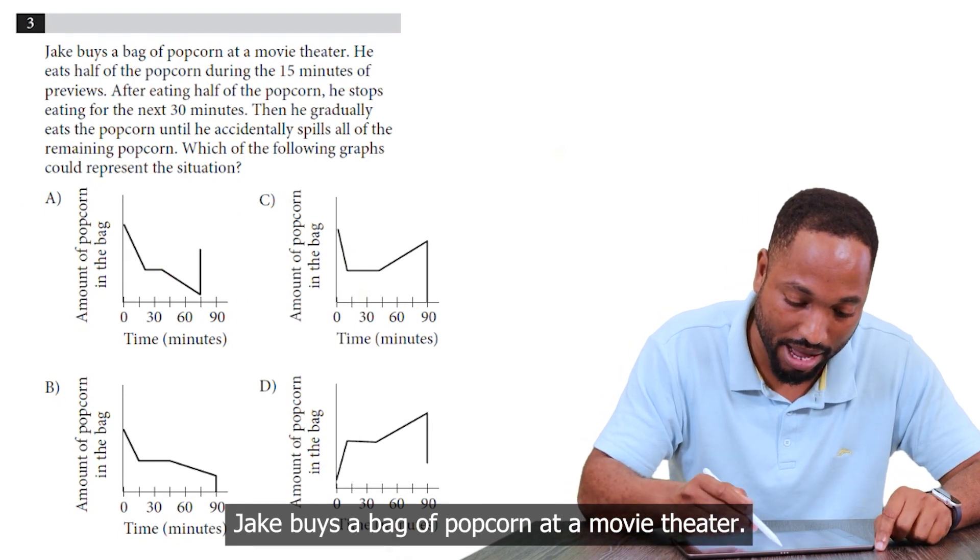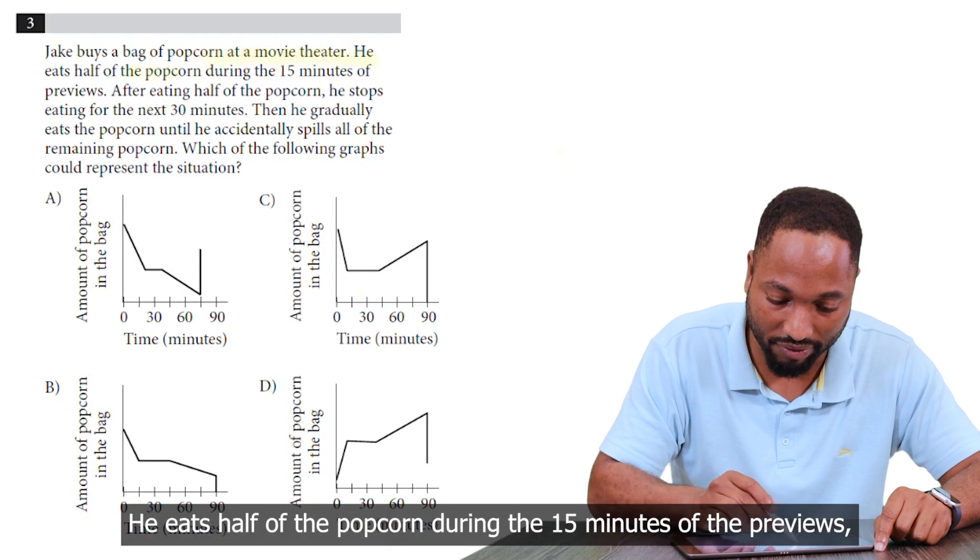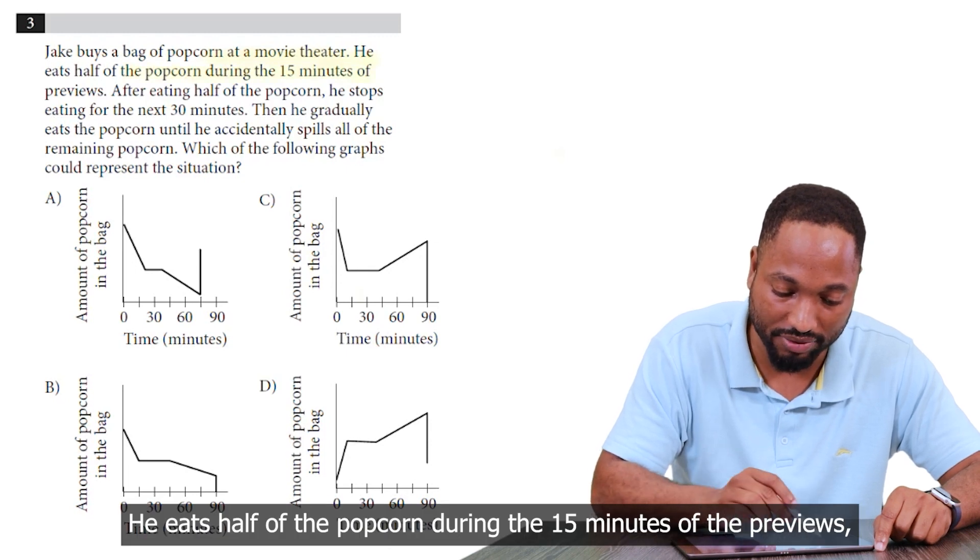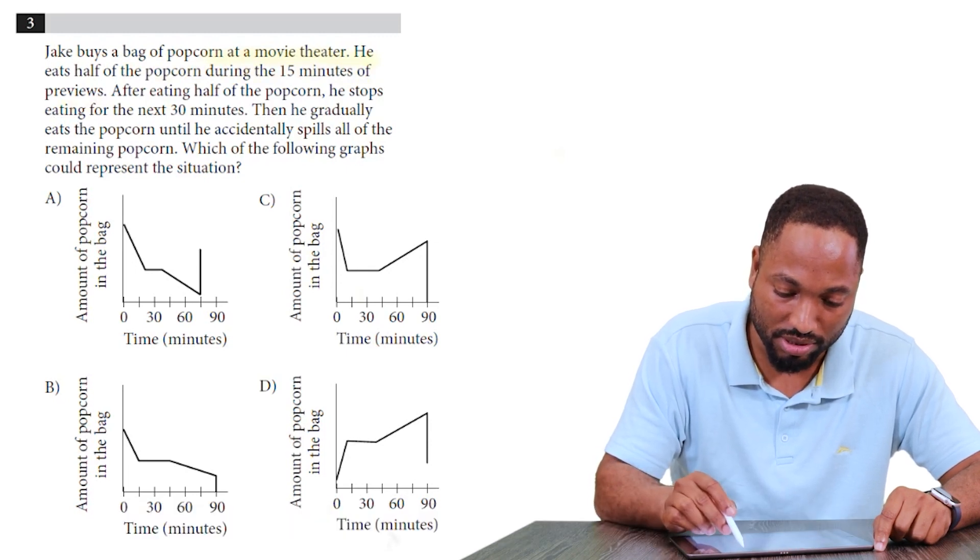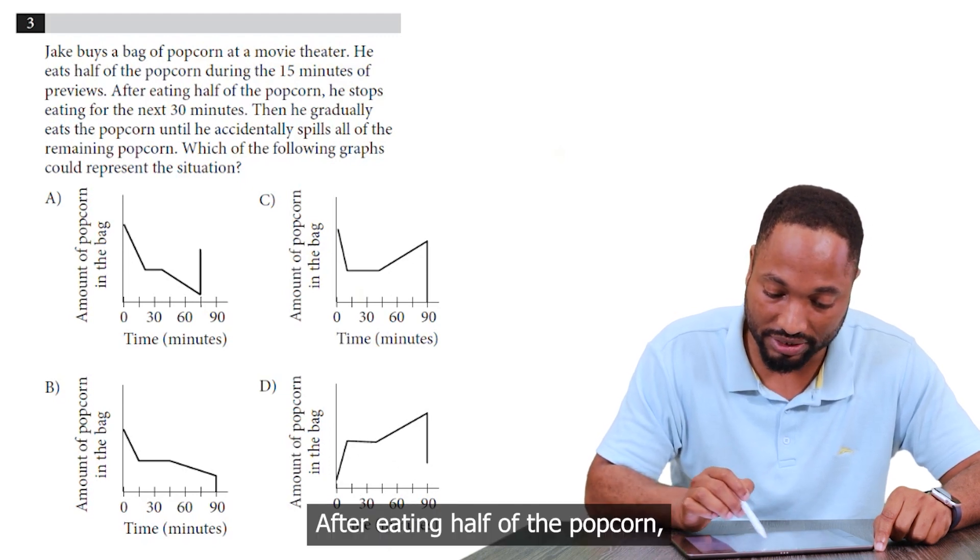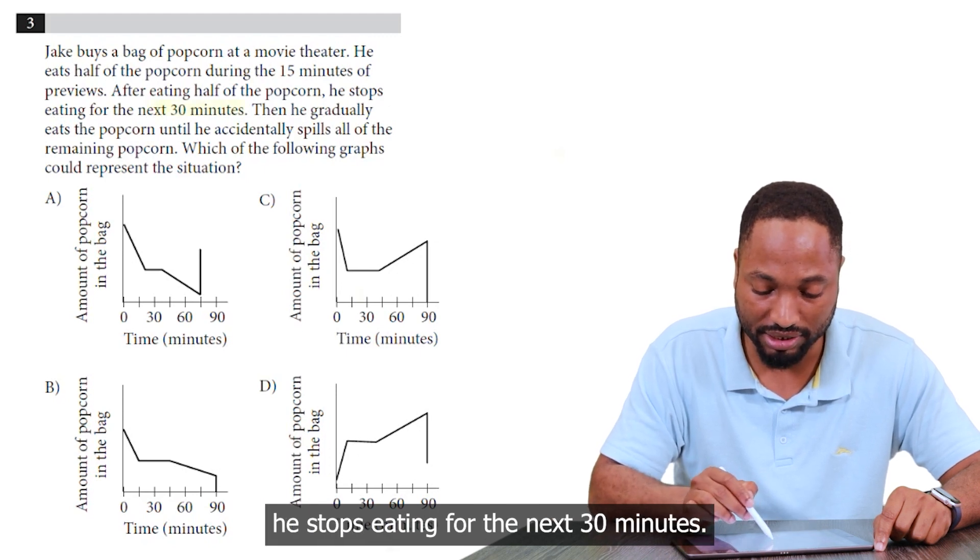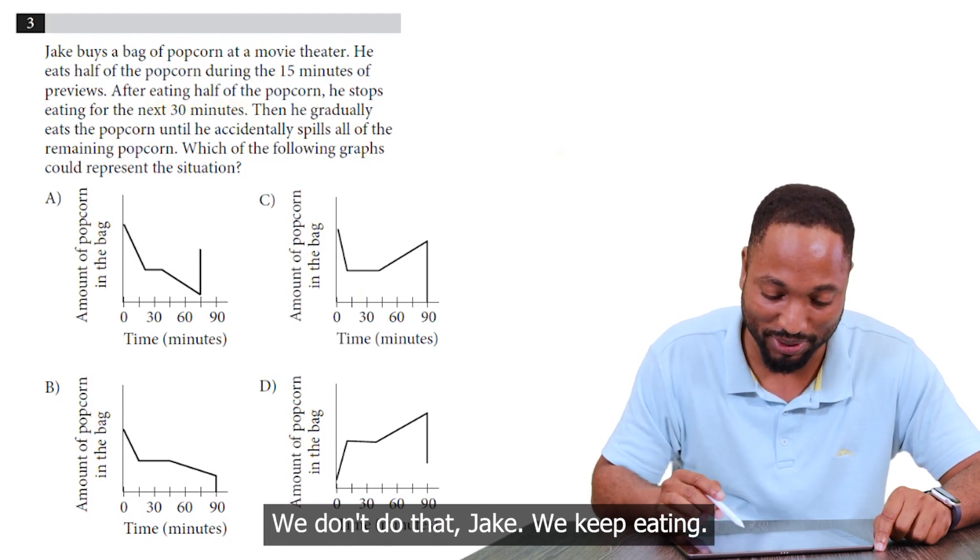Jake buys a bag of popcorn at a movie theater. He eats half of the popcorn during the 15 minutes of the previews. As we all do, Jake, we all do this. After eating half of the popcorn, he stops eating for the next 30 minutes. We don't do that, Jake. We keep eating.